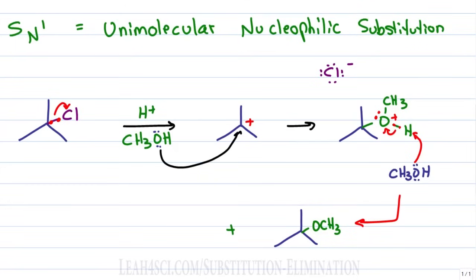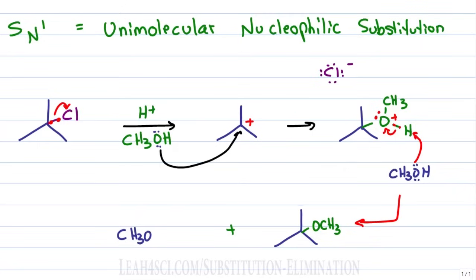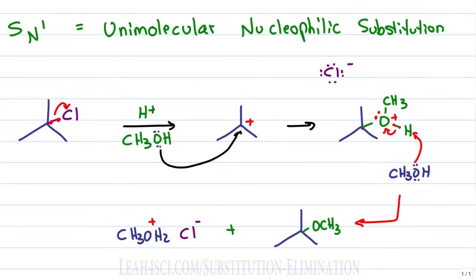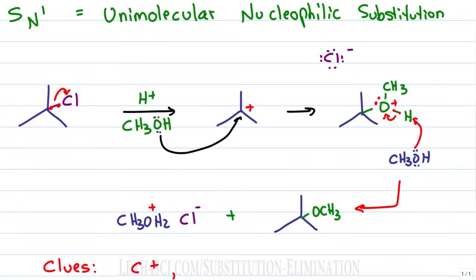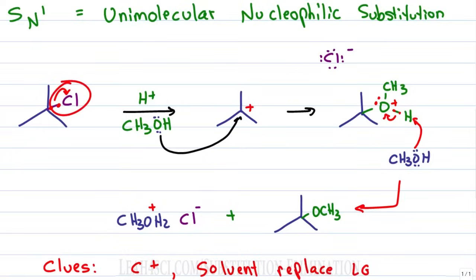If you're a professor showing side products, you can also show the protonated solvent molecule as CH₃OH₂⁺ with its counter ion, the leaving group Cl⁻. The clues to recognize an SN1 reaction: a carbocation intermediate as the rate-determining slow step, and a solvent nucleophile attached where the leaving group used to be.